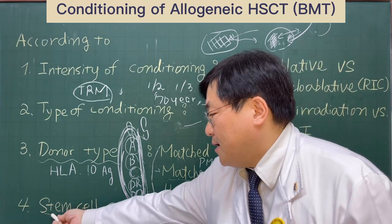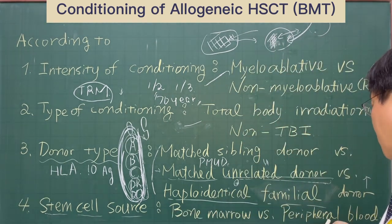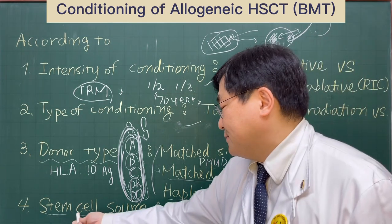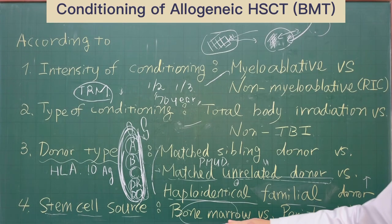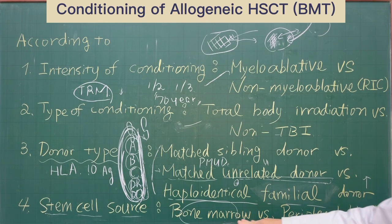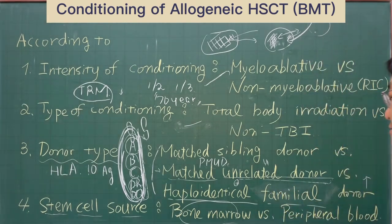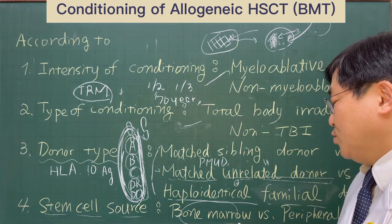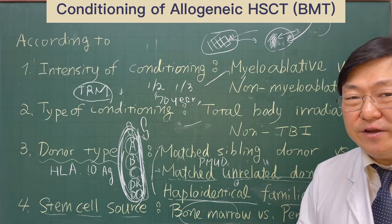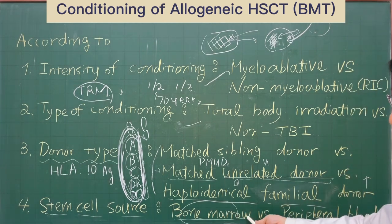Finally, we can classify the allogeneic stem cell transplantation into two types according to the stem cell source. If we use bone marrow stem cells, we call this bone marrow stem cell transplantation. But bone marrow stem cells are very hard to obtain from the donor's iliac bone — the donor usually experiences more than a hundred punctures of their iliac bone when we harvest hematopoietic stem cells from the bone marrow.